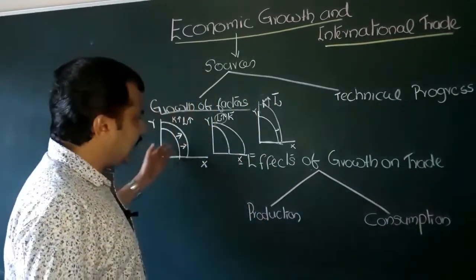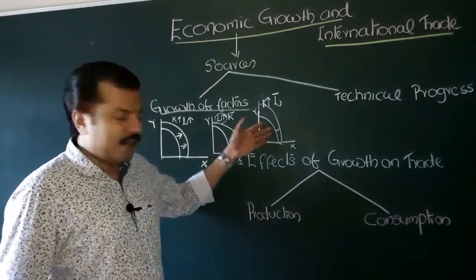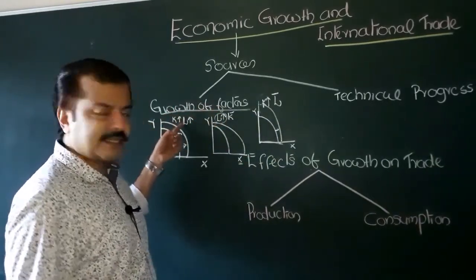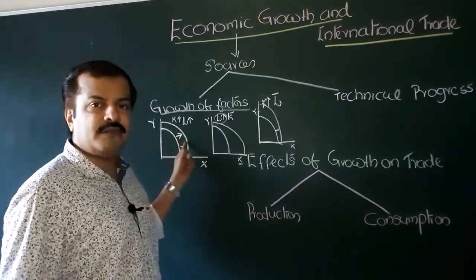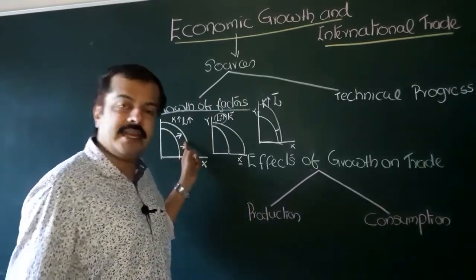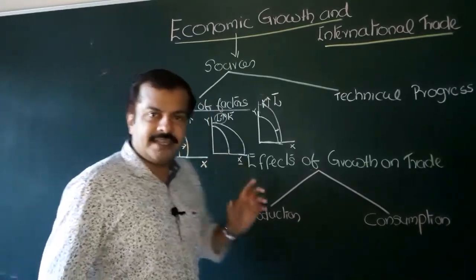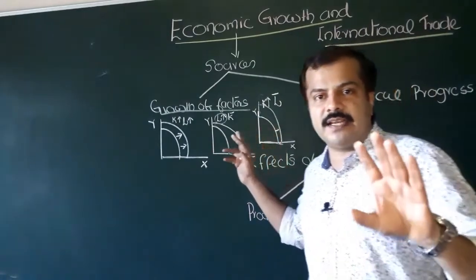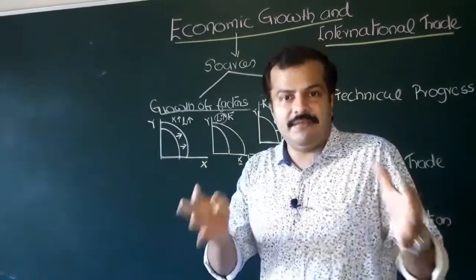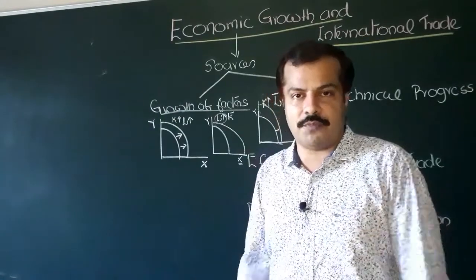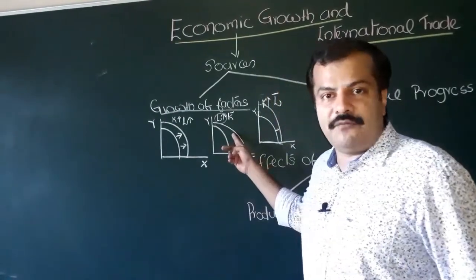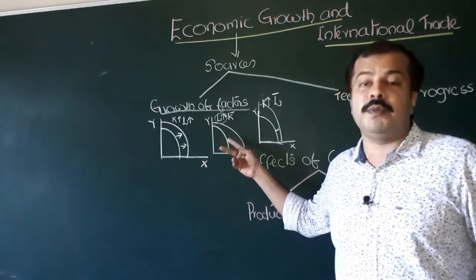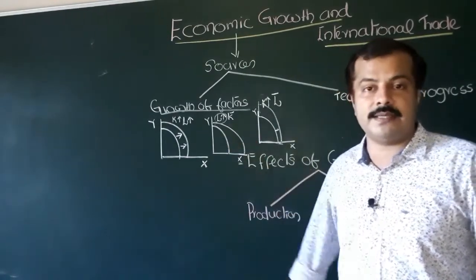So we have seen three possibilities. When there is growth of both factors of production, the production possibility curve will shift in an even, equi-proportional manner. But things are more complex when we explore the case of increase in the availability of only one factor of production. If the quantity of labor increases, your production possibility will shift towards the right and it will be more biased towards the labor-intensive commodity.